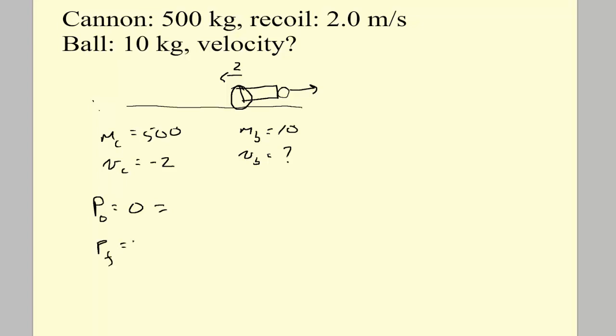So the momentum after the ball is fired is going to be the momentum of the cannon plus the momentum of the ball. And these are all vectors, although they're very simple vectors because everything's acting in a line. So the momentum of the cannon is mass times velocity. So 500 times the negative 2. Because it's vectors, we need to be righteous about the negative signs. And the momentum of the ball is the mass of the ball 10 times its velocity.